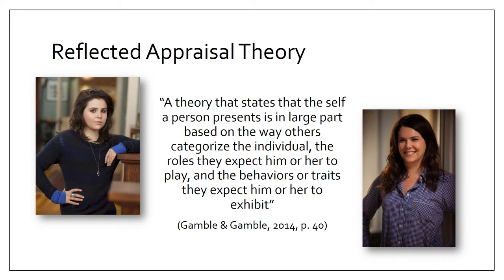The reflected appraisal theory can be applied to Amber. While she is not the best student in most of her classes, when she turned in the paper for Mr. Sear — albeit Sarah's work — he believed her to be a brilliant writer who had a bright future. He even offered to write her a reference for a college application. According to the text, the reflected appraisal theory states that the self we present is in large part based on the way others categorize us, the roles they expect us to play, and the behaviors or traits they expect us to exhibit. It is also referred to as the looking-glass self. This mirror of sorts reflected a different image back to Amber that was completely unseen in any other class, and her performance was reflective of that.